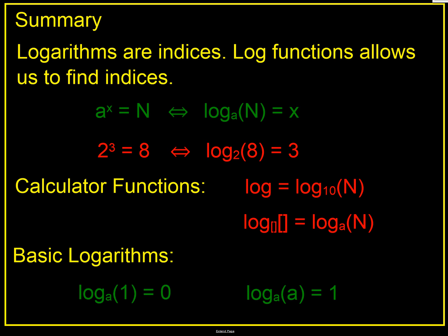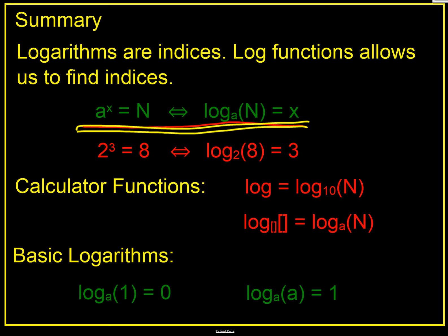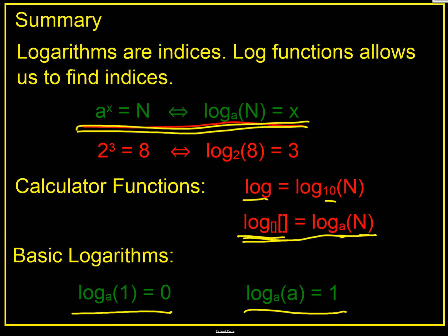Here's the summary page. Our basic formula: a to the power x equals n is rewritten in log form as log base a of n equals x. We can get log values from our calculator — there's a log base 10 function, or a generalised log function where we enter our base a and value n. Two key results always hold: log to the base a of 1 is always zero, and log to the base a of a is always one.